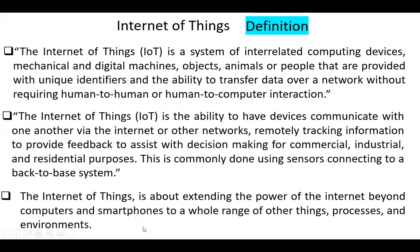First, definition. There are several definitions of the Internet of Things. One definition: the Internet of Things is a system of interrelated computing devices, mechanical and digital machines, objects, animals or people that are provided with unique identifiers and the ability to transfer data over a network without requiring human-to-human or human-to-computer interaction.